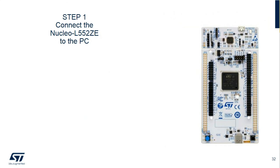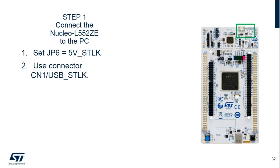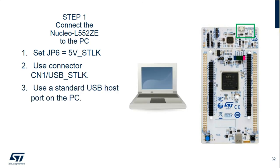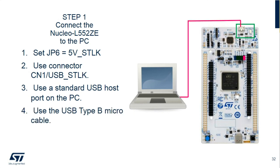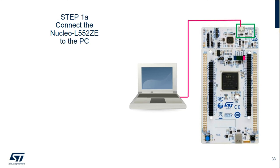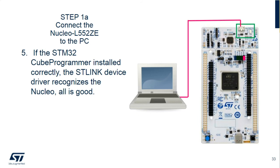Now for the hands-on: first, make sure the power source is correct — set the JP6 jumper to power from the ST-Link v2 on board, which is the factory default. Next, take the USB Type-B cable and plug it into the Nucleo board, then find a vacant USB port on your PC and plug it in. This will allow the PC to supply power and the Cube Programmer to talk to the board. When you plug the cable into the host port, the system will recognize the device, the USB driver will be installed, and everything should work.